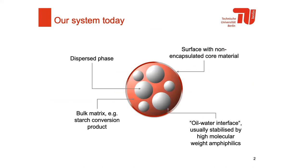At the end, the system we are dealing with looks like this schematic drawing. We have a bulk matrix, for example consisting of a starch conversion product like maltodextrin or glucose syrup. We have a dispersed phase which is lipophilic in nature. Of course, we have some amphiphilic material — usually high molecular weight emulsifying constituents — which stabilize the emulsion in the liquid state. We end up with a solid particle where the oil droplets are encapsulated and trapped in the carbohydrate-based matrix, with some remaining non-encapsulated material on the surface of the particle.